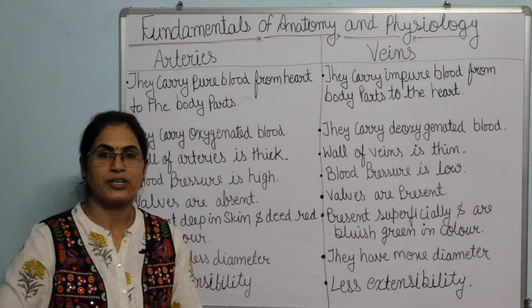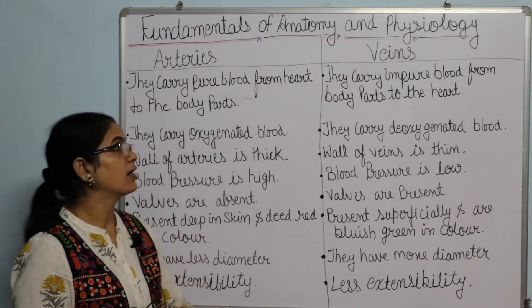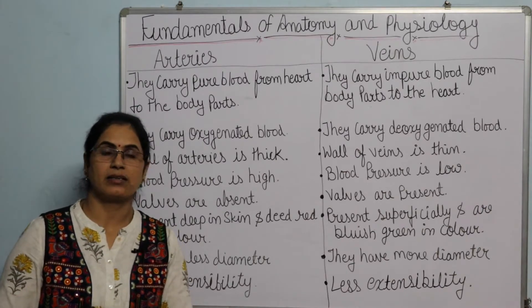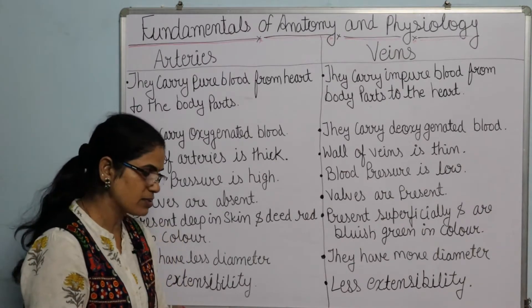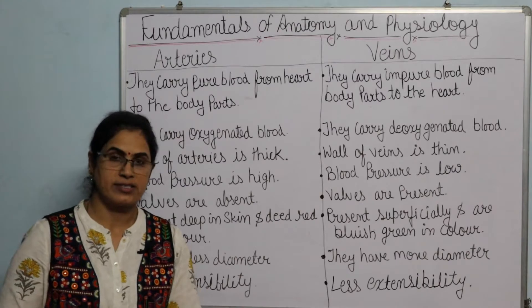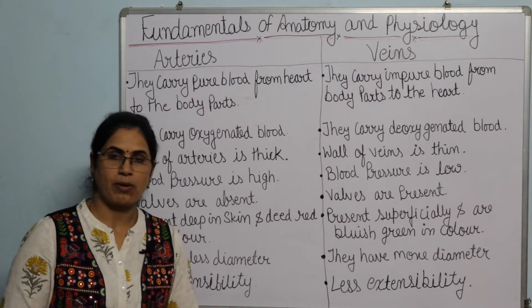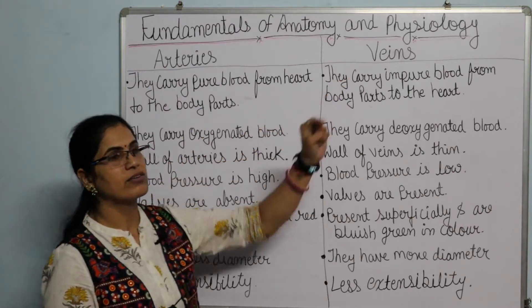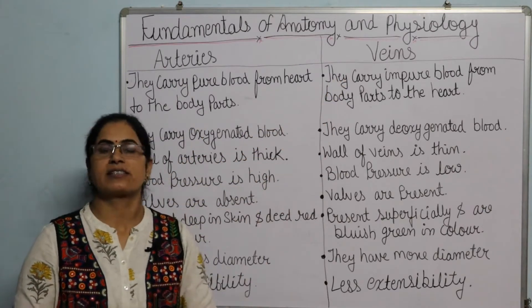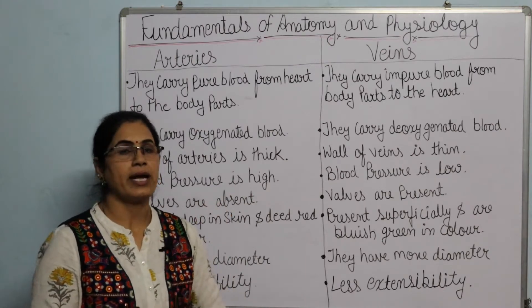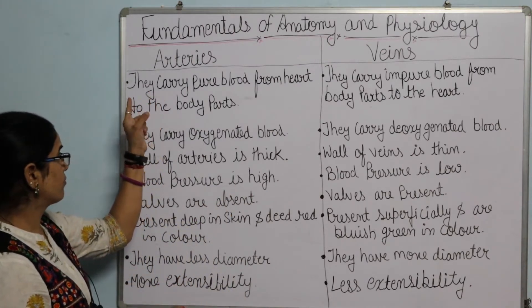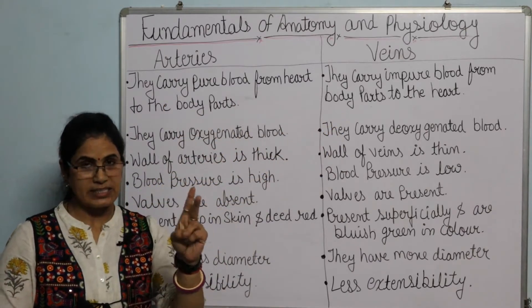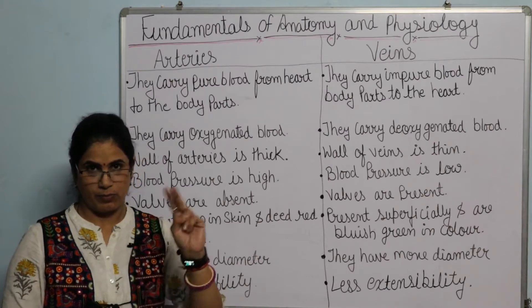Good morning students. We continue chapter number 8, fundamentals of anatomy and physiology. Today we are taking the last topic, which is the meaning of the circulatory system. In this topic, we will first discuss arteries and veins, and after that we will discuss the heart. So what are arteries and veins, and what is the difference between both of them?